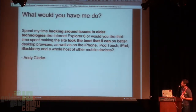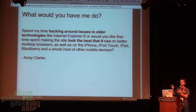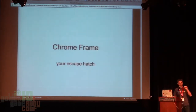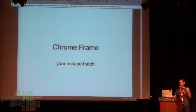Here's a great quote: what would you have me do — spend my time hacking around issues in older technologies like IE6? Or would you like me to spend my time making the site look the best it can on better desktop browsers, as well as iPhone, iPod Touch, iPad, BlackBerry, and a host of other mobile devices? This is the message we need to take to our clients. What about IE6? Chrome Frame is a plugin you can install into IE6, 7, and 8 — it's your escape hatch. It essentially embeds Chrome's rendering engine into IE. You just send a header or a meta tag, it turns it on. Prompt your users to install it — they understand a plugin.